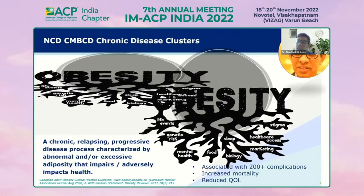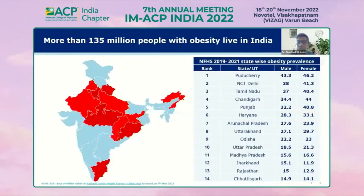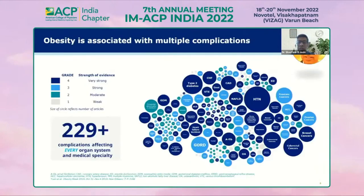We have a very large proportion of people in India with obesity — the approximate estimate is around 135 million — because we are thin fat Indians. Clearly, multiple complications are associated with obesity.